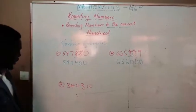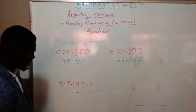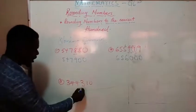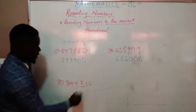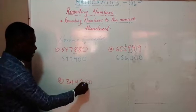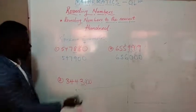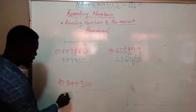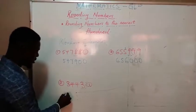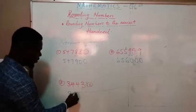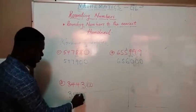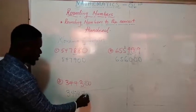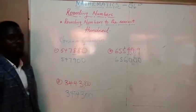Let's look at our last example for today. Our nearest hundred — let's identify it. Three is at the hundreds place. The digit behind is one. Since it is one, we change this digit to zero, and we already have a zero value. So our final answer will be three, four, four, three. The one will change to zero — zero value.